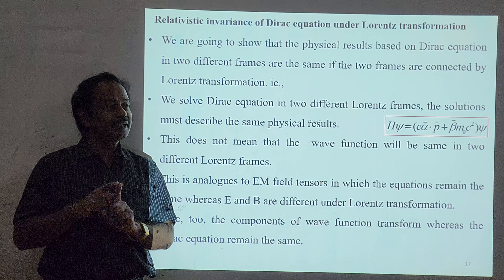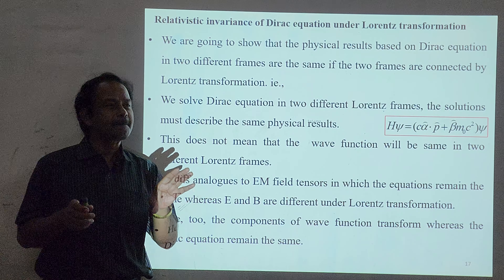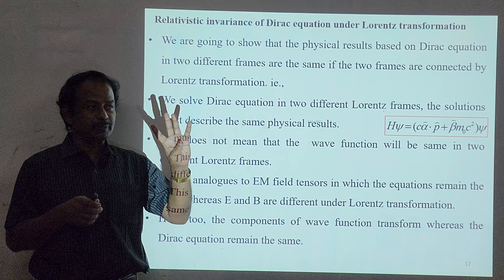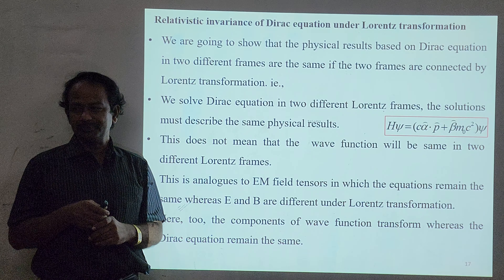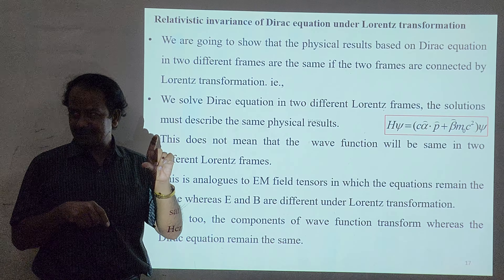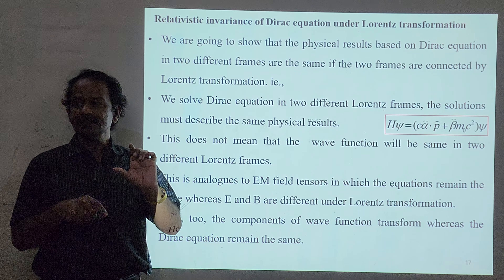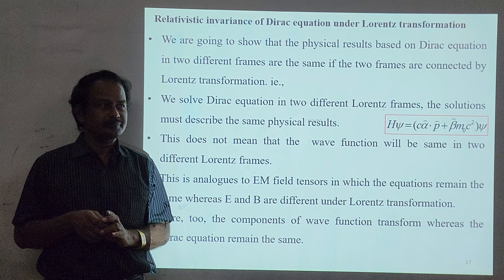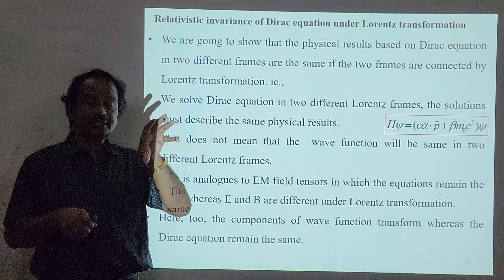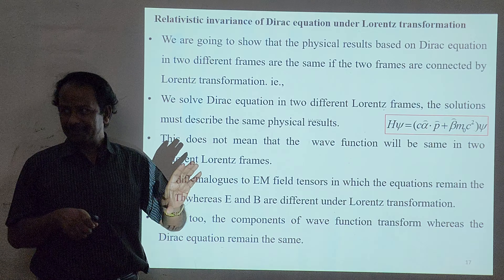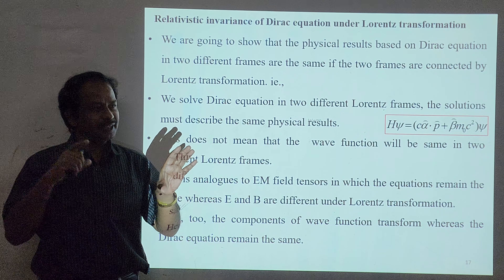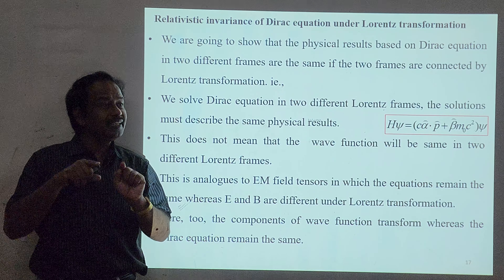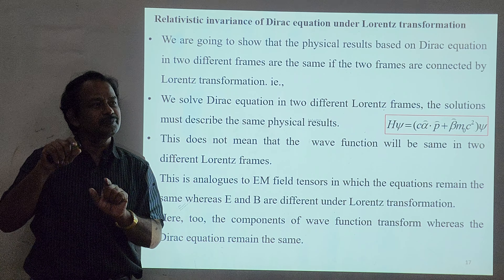Only E and B will change under Lorentz Transformation. For example, with Maxwell's equations in one coordinate system, the solutions are E and B — the electric and magnetic fields. In another coordinate system, the Maxwell's equations remain the same, whereas E and B become E-prime and B-prime. The form of the equations is preserved, but the solutions transform.